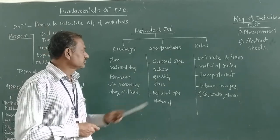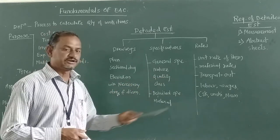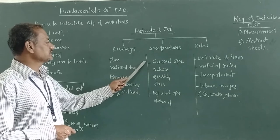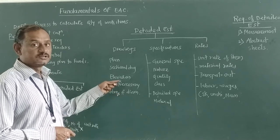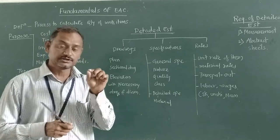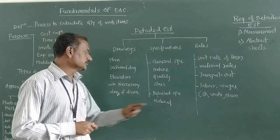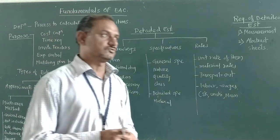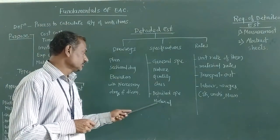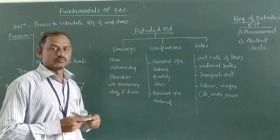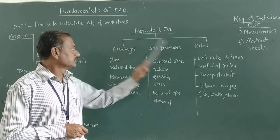Specifications are also required. There are two basic types of specification: general specification and detailed specification. In the general specification, the nature of work, quality of work, and class of work to be considered for completion of a particular item of work are described. In the detailed specification, we specify the quality, type, and quantity of material used to complete the work. All these specifications are considered for calculation of detailed estimate.